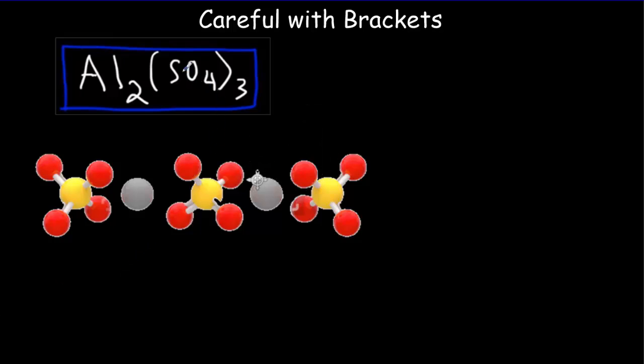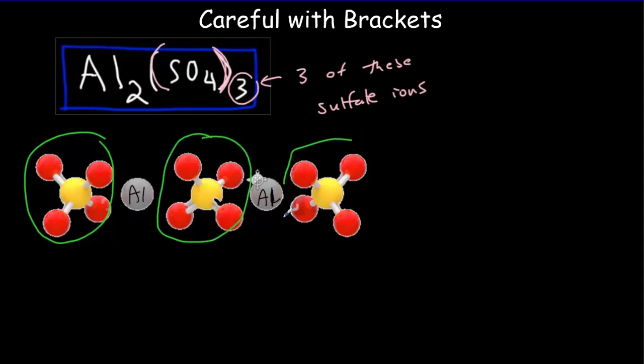Be very careful when you see a bracket within a molecule. This SO4, it's sulfate. It's a sulfate ion, a polyatomic ion. And this three here, this subscript, is saying that there's three of these sulfate ions. So our molecule actually looks like this. There's two aluminums. There's the aluminum. They're easy. And then there's three of these sulfate ions. And each sulfate ion has four oxygens and one sulfur.